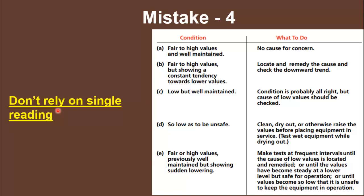Last but not least, a very common mistake is relying on a single reading. The correct procedure is to build a trend of the equipment's insulation resistance over time. By referring to this table, you can judge the insulation condition from the trend. If you are continuously getting higher values, there is no cause for concern. However, if the trend is continuously decreasing, the equipment may still be operational but something is causing the insulation resistance to drop — which needs attention.